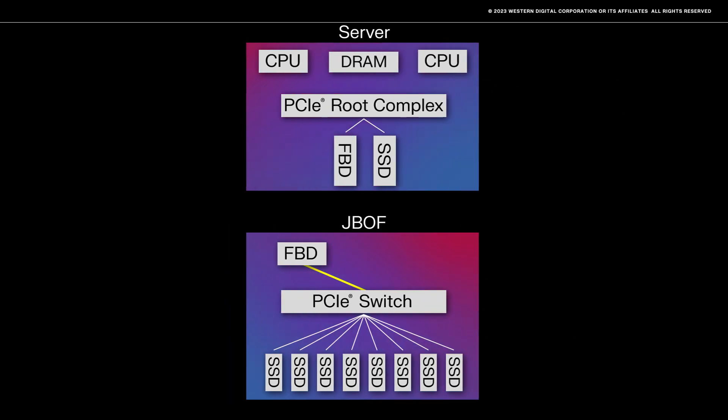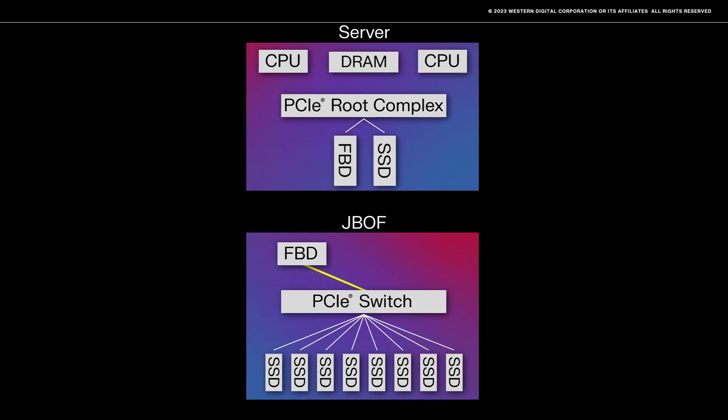You can see we have separated the PCIe connections in the server from the PCIe connections the SSDs are using. The red line in between the two chassis represents the fabric and the FBD is the fabric bridge device. The fabric bridge device in each chassis is responsible for converting the local PCIe traffic to Ethernet traffic and vice versa.